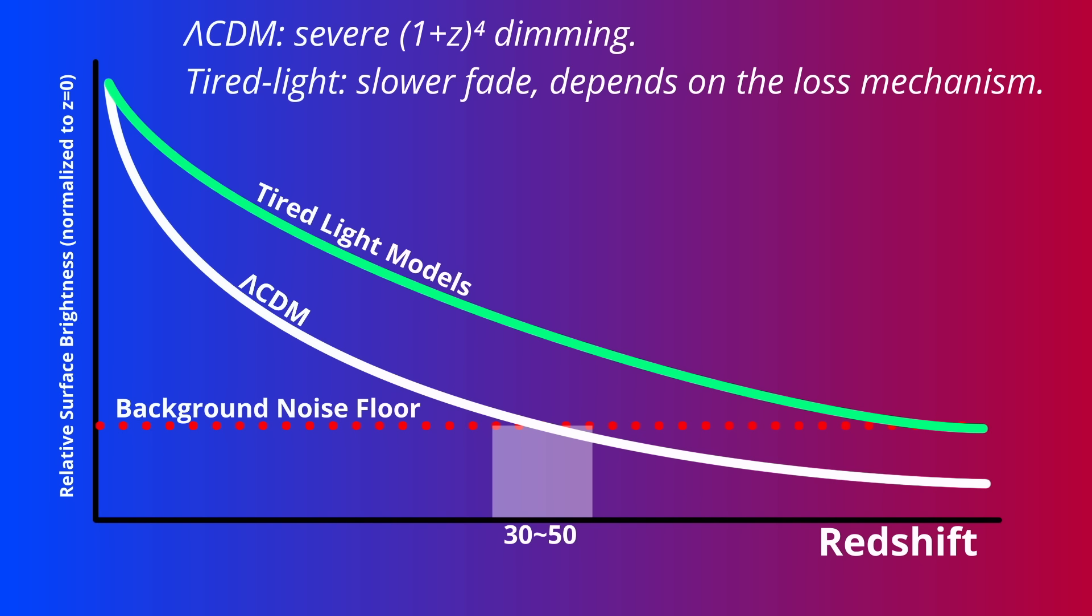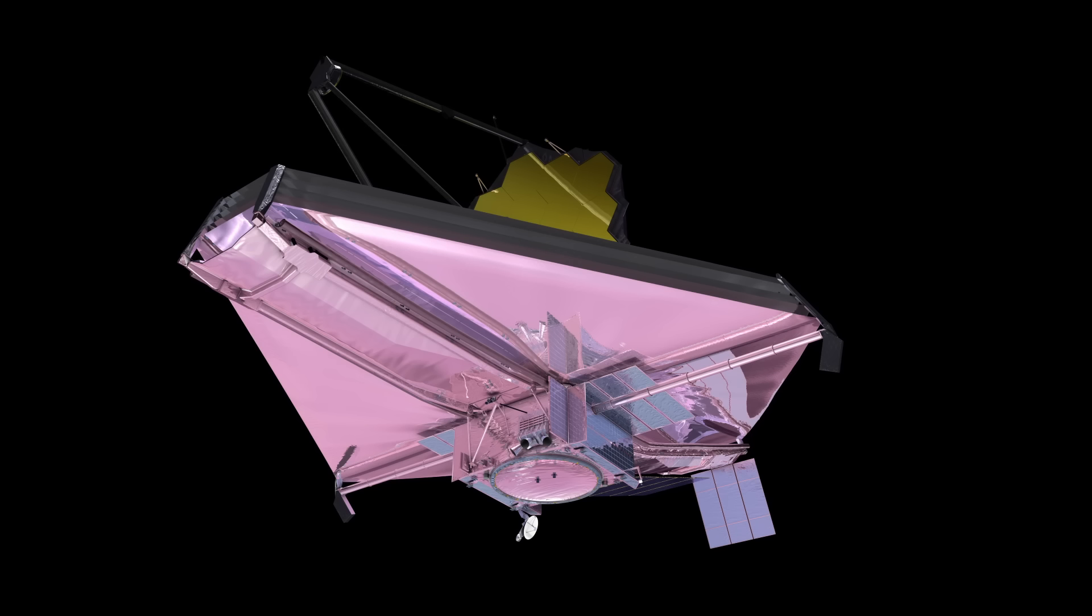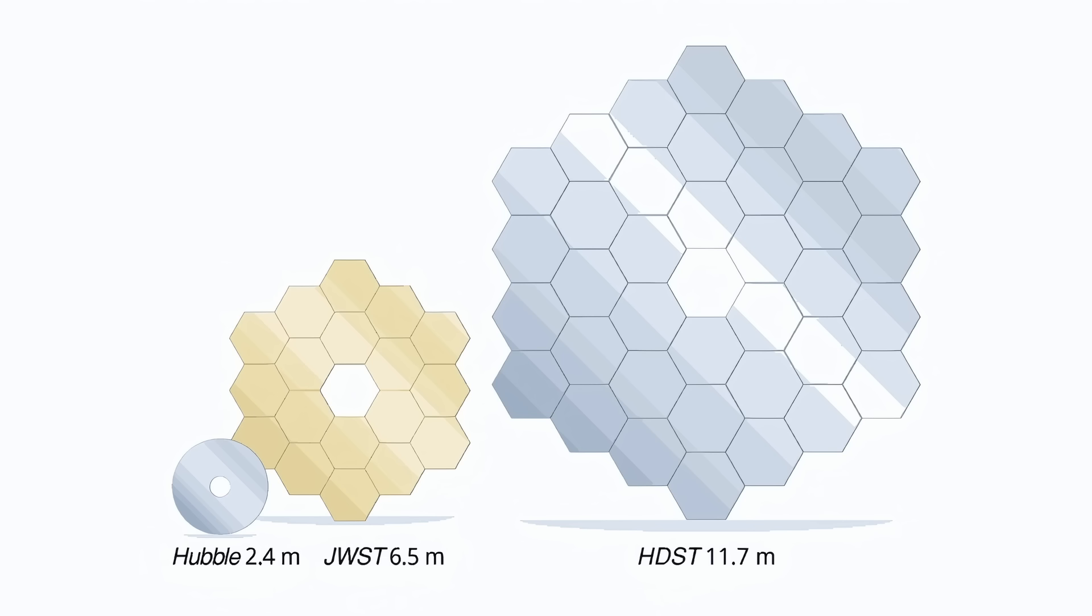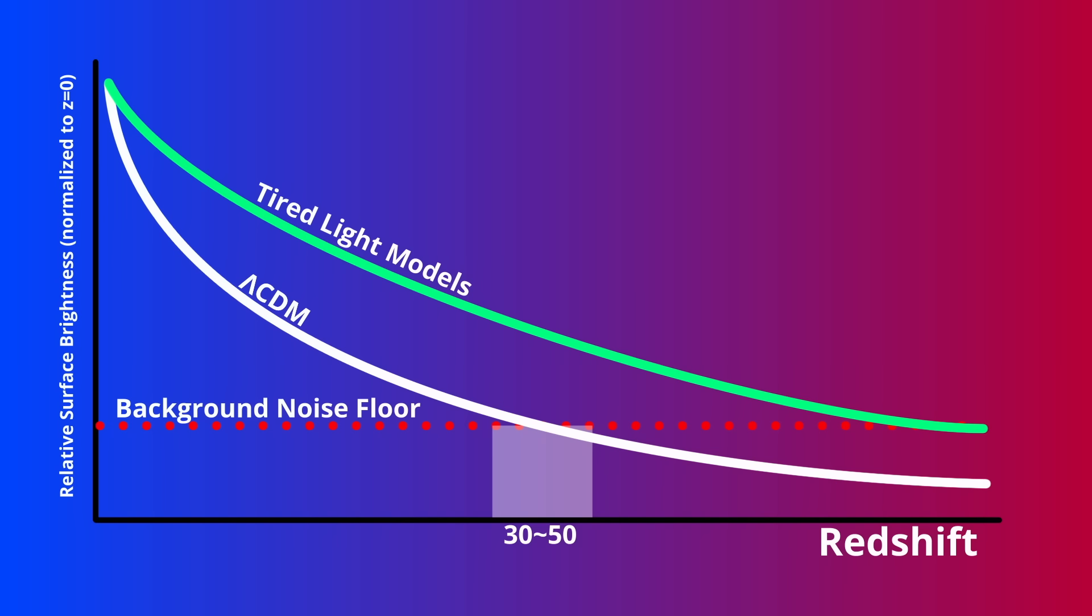So the deeper we can push, the sharper the question becomes. Do galaxies vanish where the Big Bang says they must, or do we keep finding them further and further back? Right now Webb can't tell us. But the next generation of 30 to 40 meter telescopes, or a bigger infrared observatory in space, could resolve the structures of the break. And at the same time, discover just how far back galaxies truly go before they hit the ultimate wall of noise.